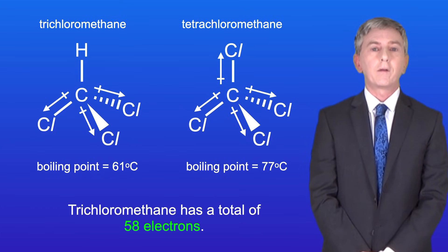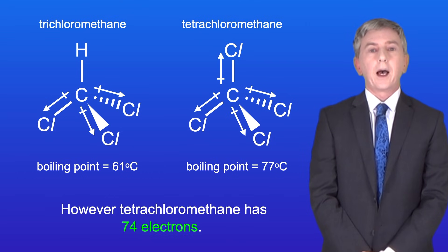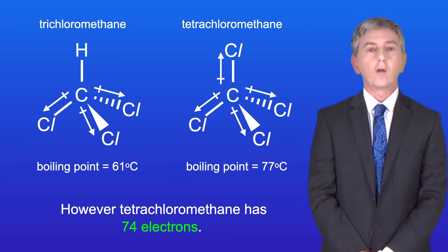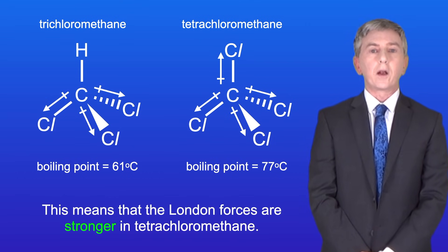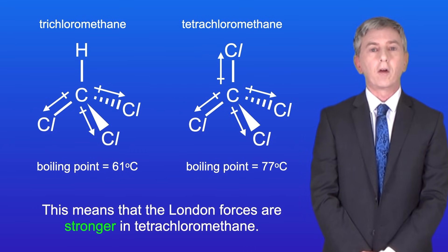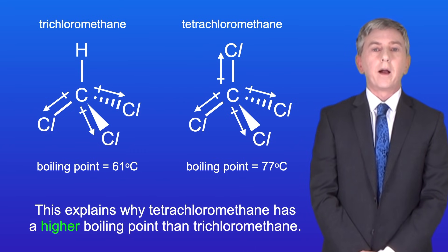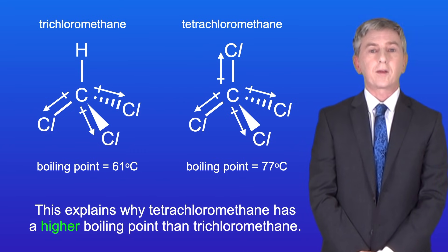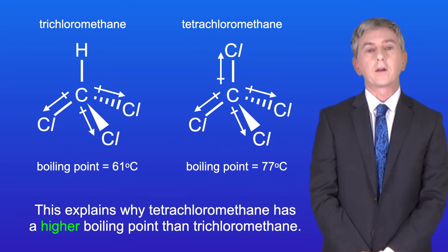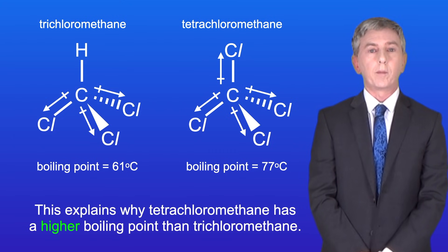Trichloromethane has a total of 58 electrons, however tetrachloromethane has 74 electrons. This means that the London forces are stronger in tetrachloromethane, and this explains why tetrachloromethane has a higher boiling point than trichloromethane.